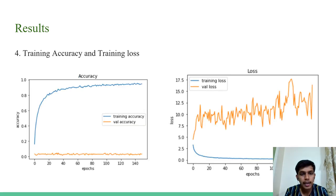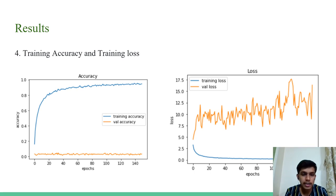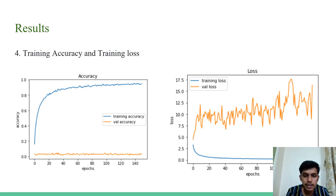The fourth graph shows training accuracy and training loss. As the number of epochs increases, the accuracy increases in the first graph, and the training loss decreases in the second graph.